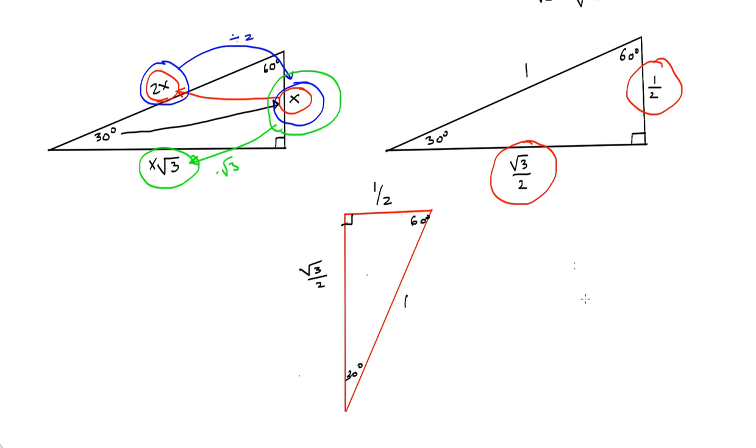So remember your 45-45-90 triangle and your 30-60-90 triangles because they will be making a reappearance very, very soon. Thanks.